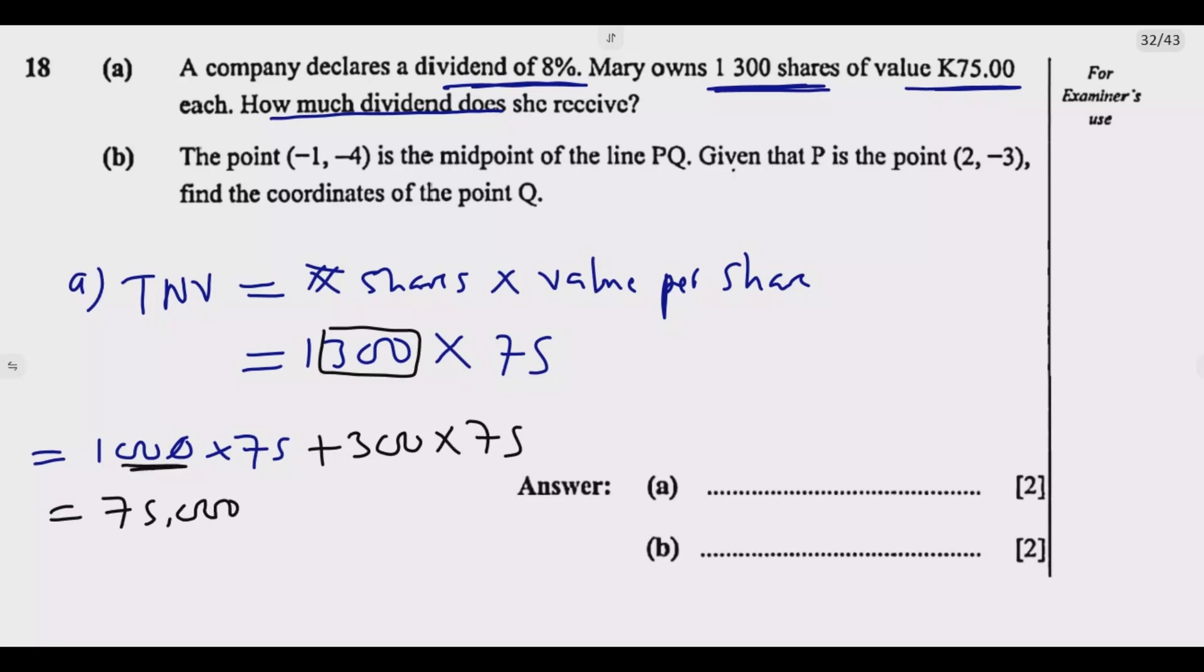1,000 times 75 is 75,000. Then 300 is multiplied by 75. I'm breaking this into two components: the 1,000 and the 300. You'll notice it becomes easier. 1,000 times 75 is actually 75,000.